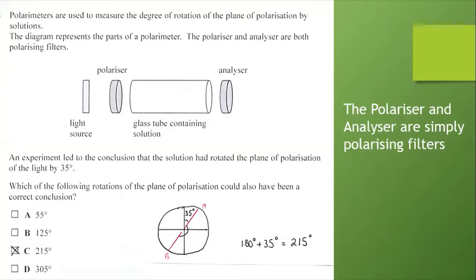Now there's another type of question, often a multiple choice question, which asks about the angle that we might move a polarizing filter through. It says here: polarimeters are used to measure the degree of rotation of the plane of polarization by solutions. The diagram represents the parts of a polarimeter. The polarizer and analyzer are both polarizing filters. I've emphasized that on the right hand side. They're just names for polarizing filters. Look at the diagram. In an experiment, we're led to the conclusion that the solution had rotated the plane of polarization of the light by 35 degrees.